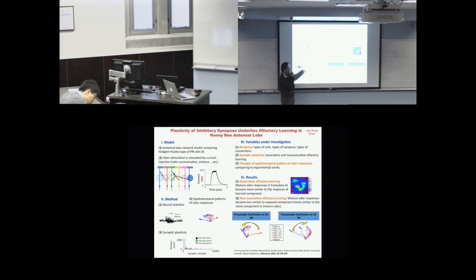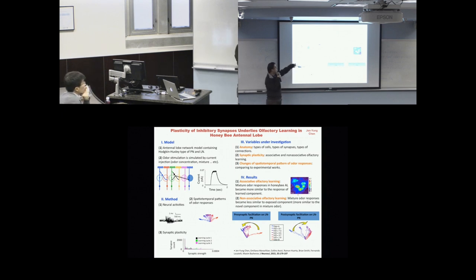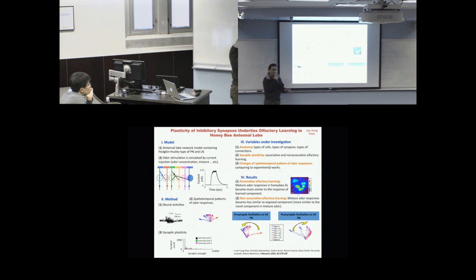The odor stimulation is implemented as current injection to each neuron. By this way, I can control any type of odor stimulation — I control the spatial-temporal pattern of the current injection to each neuron, so I can have individual odors, mixtures, or different concentrations of odor, depending on the purpose of the simulation.